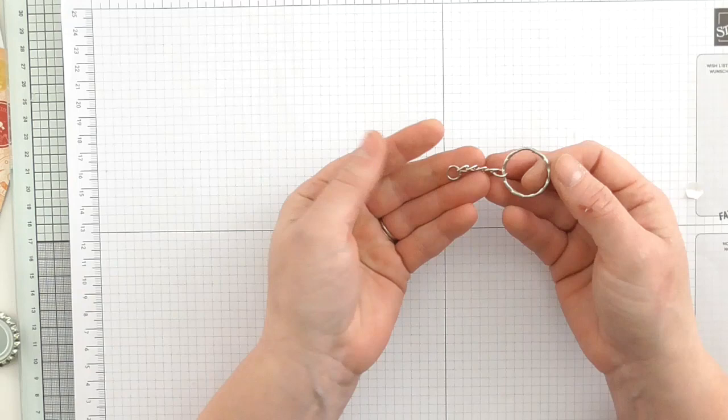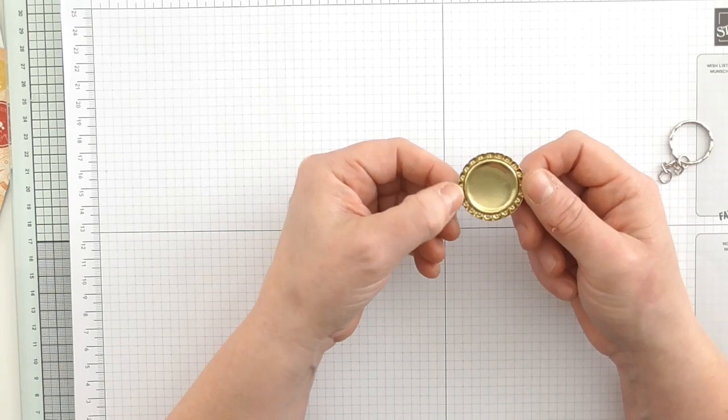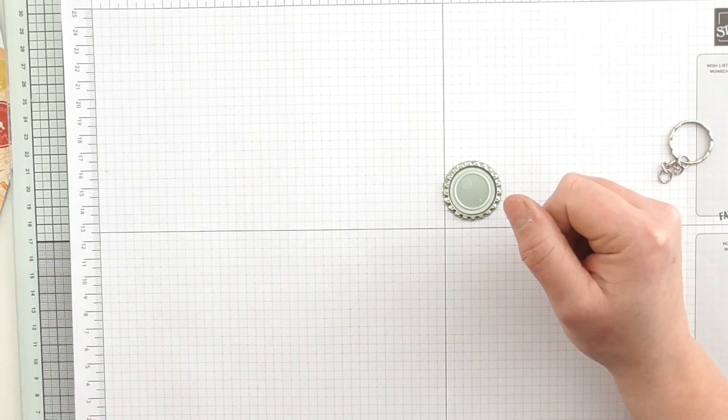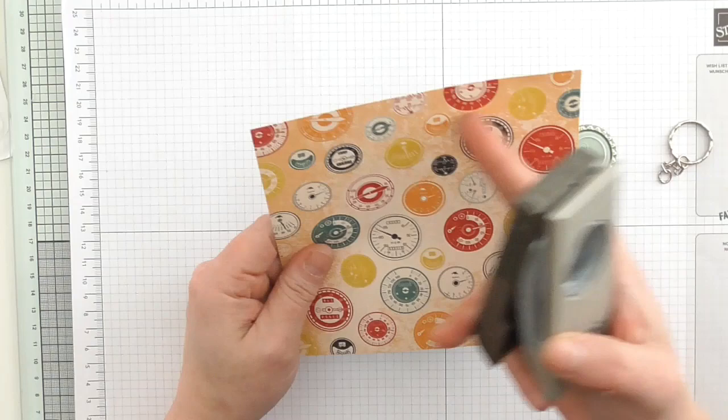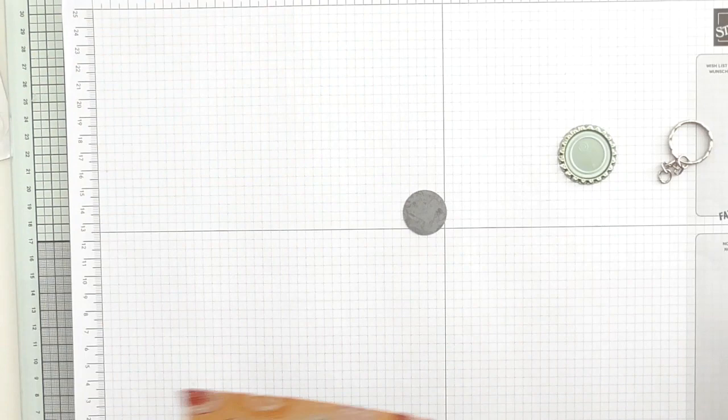For the little gift, what I've got here is a little keyring that I have recycled from another keyring. What I have here is a bottle cap - this is just a normal yellow color bottle cap. I've put it through my Big Shot. It doesn't do your Big Shot any harm. And what I've got here is some more of the DSP from the Garage suite. I'm going to punch one of these dials - they're like car dials.